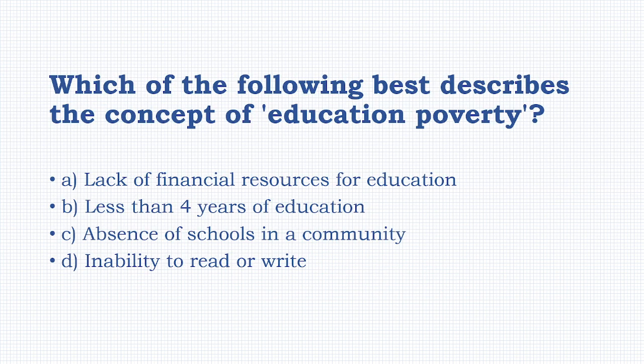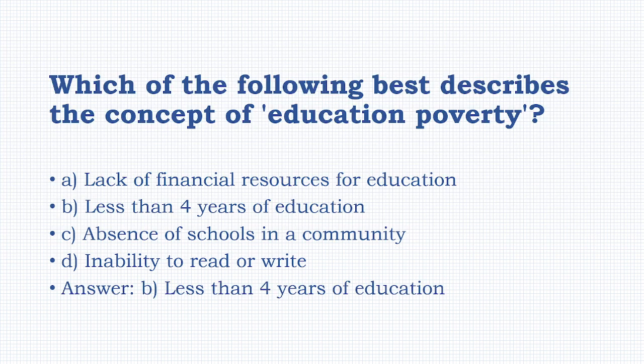Which of the following best describes the concept of 'education poverty'? Options: lack of financial resources for education, less than four years of school education, absence of school in a community, inability to read or write. The answer is option B: less than four years of education.